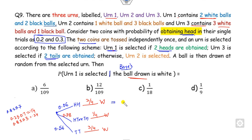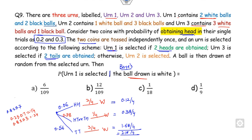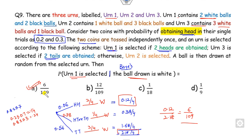Now multiply them: for urn 1 this gives 0.06/4 = 0.012 (written as 0.12/4 here), for urn 2 it is 0.38/4, and for urn 3 it is 0.56 × 3/4 = 1.68/4. The total is 2.18/4. The required answer — the probability of urn 1 given a white ball is drawn — is the urn 1 contribution divided by the total. So the right answer is obtained by dividing these values.